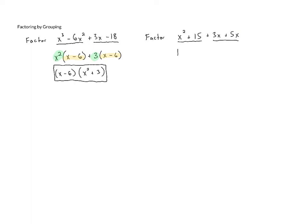So we can pull out 1 as the GCF, and then we keep the x² + 15 as leftovers. Then let's look at the next group. If we look at 3x + 5x, both of those contain an x, so we can pull out an x, and that gives us 3 + 5 as leftovers. But if we look at what we have inside the parentheses here, we don't have the same thing inside the parentheses like we did in the last problem. In the last problem, we had x - 6 inside both pairs of parentheses, so they matched, but here they don't.